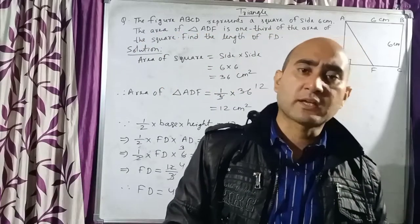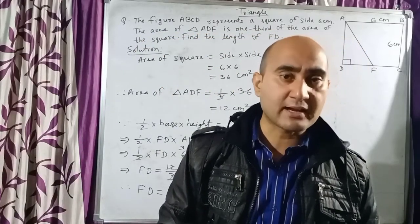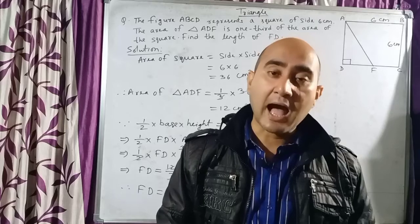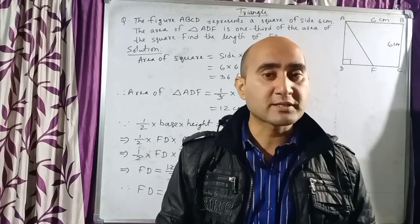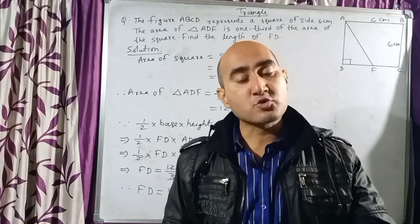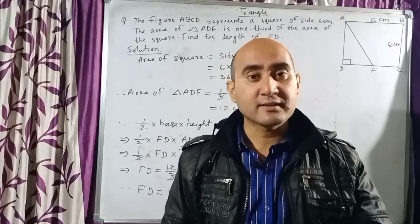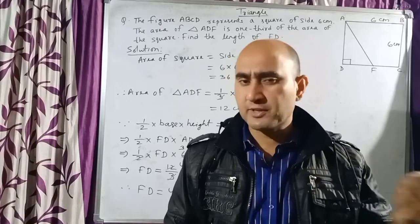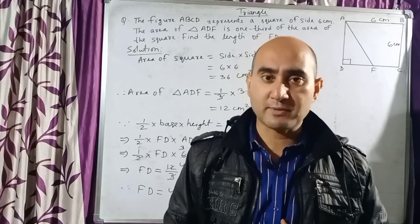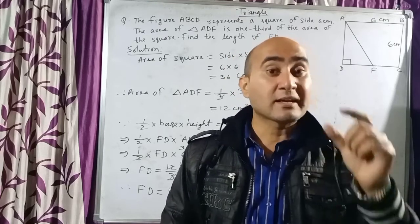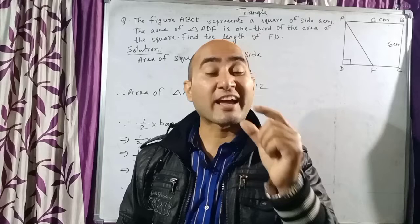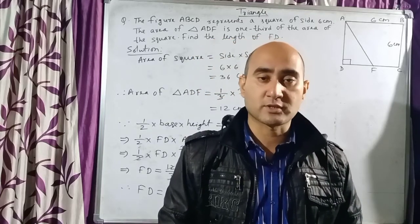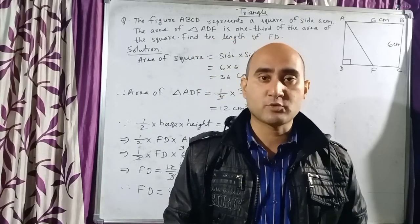Whenever the area of a right-angled triangle is given, use the formula: area equals half into base into height. If you need to find the height, you can find it from the formula, and if you need to find the base, you can find that too — as long as the area value is known. I hope you understood, children. Thank you.